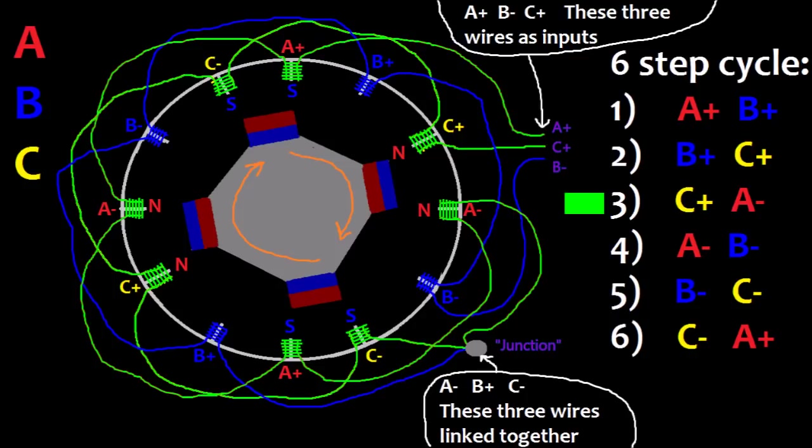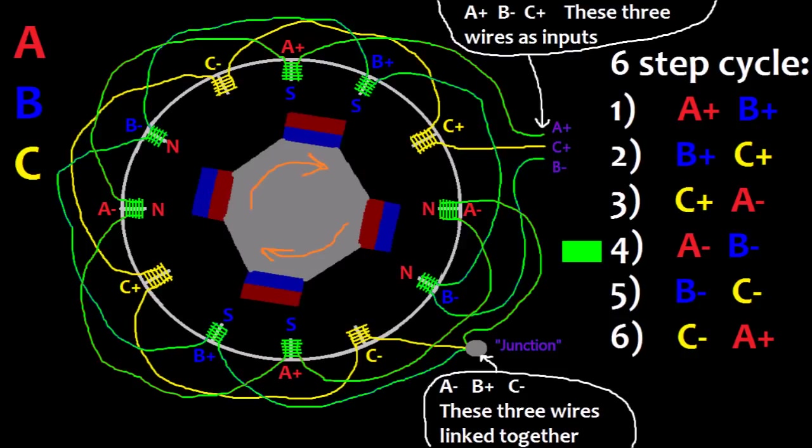Next step is C plus A minus, so it's flowing in the forward direction through the C coils and the negative direction through the A coils. So plus signal comes in the C plus wire through the C coils to the junction, then to the A minus wire and out the reverse direction through the A coils.